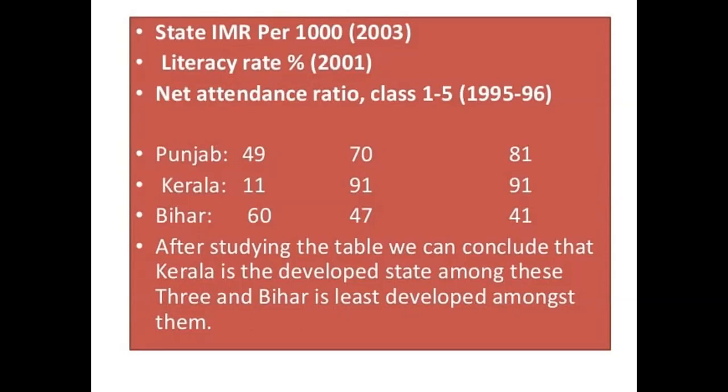Now let us compare these three states by their infant mortality rate. In Kerala, out of 1,000 live births, only 11 children died before completing one year of age. Whereas in Punjab, the infant mortality rate was 14 — much higher than Kerala, even though the per capita income of Punjab is more than that of Kerala.